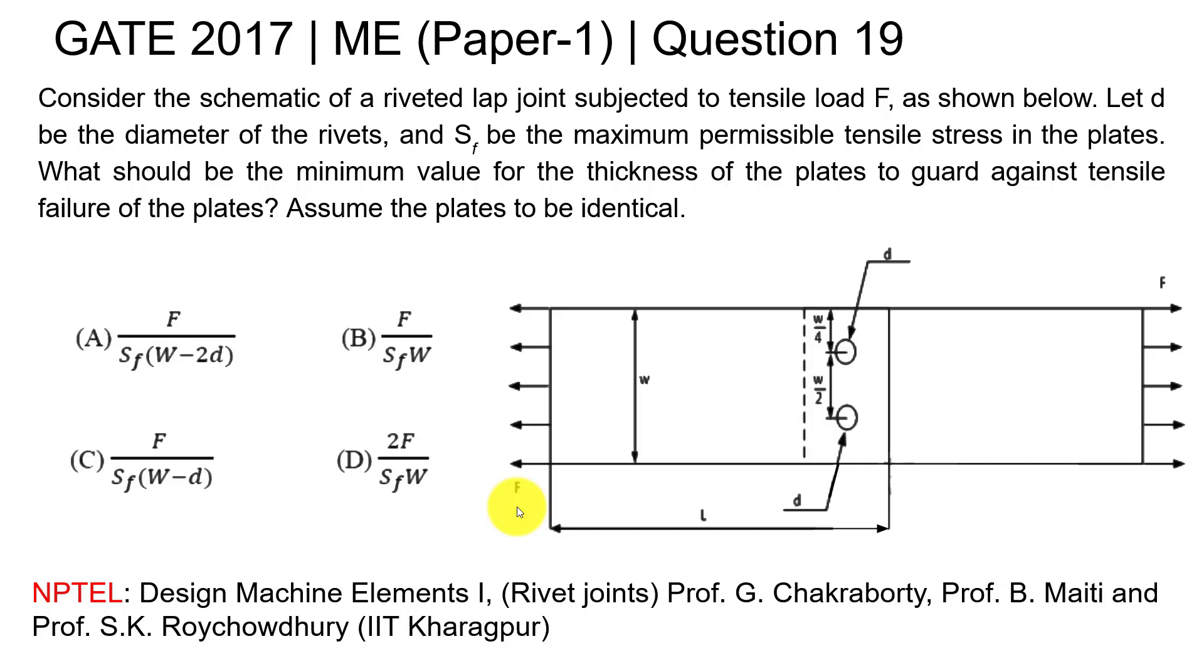Applied force F, SF is the maximum permissible tensile stress in the plate, and its width is W. You are supposed to find what is the minimum thickness such that the plate will be safe against tensile failure.